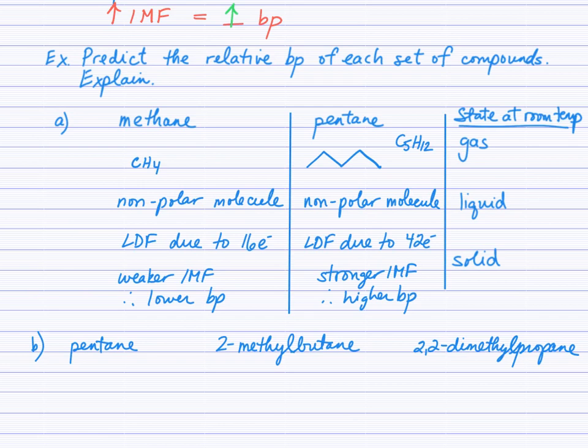The London dispersion forces within a sample of methane are due to each molecule having 16 electrons, attracting electrons in neighboring molecules and vice versa. With pentane, the London dispersion forces are due to 42 electrons. If you recall from the previous video, more electrons indicate stronger London forces. Pentane experiences stronger IMF, which leads to a higher boiling point. Pentane is still a gas at room temperature, as is methane. If you have natural gas, a gas furnace, or gas stove in your home, it's methane that is the gas that's being burnt, but pentane is also a gas at room temperature but it does have a higher boiling point.